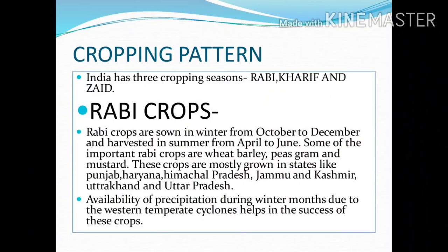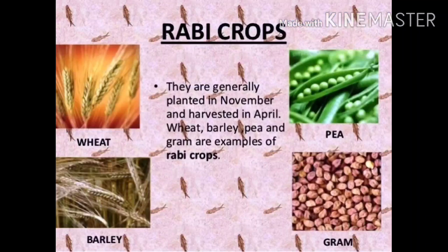Now let us see the cropping pattern. India has three cropping seasons: Rabi, Kharif, and Zaid. Rabi crops are sown in winter from October to December and harvested in summer from April to June. Some of the important Rabi crops are wheat, barley, peas, gram, and mustard. These crops are mostly grown in states like Punjab, Haryana, Himachal Pradesh, Jammu and Kashmir, Uttarakhand, and Uttar Pradesh. Availability of precipitation during winter months due to the western temperate cyclones helps in the success of these crops.